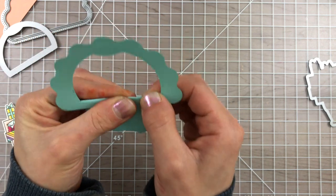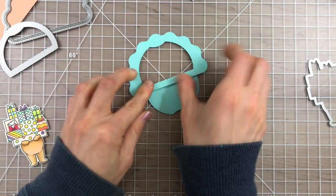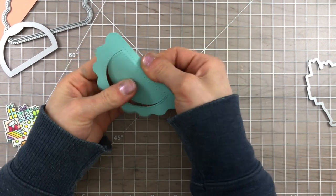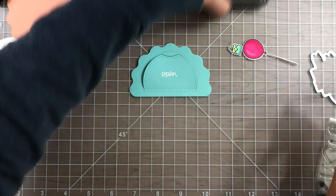There's a scored line that is created when you die cut this in your machine and I'm just going to go ahead and fold that over so that way I have a nice crisp line ready to go so I can start using this then once I've decorated it.